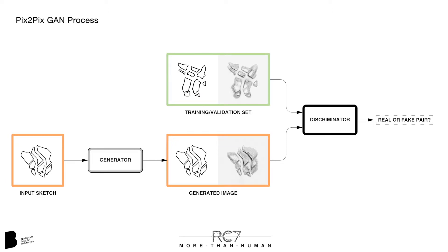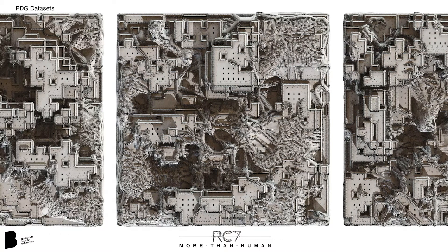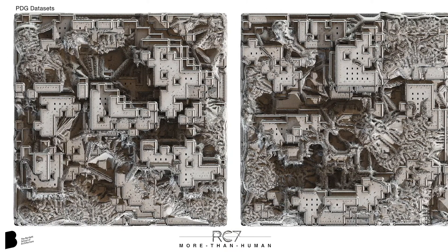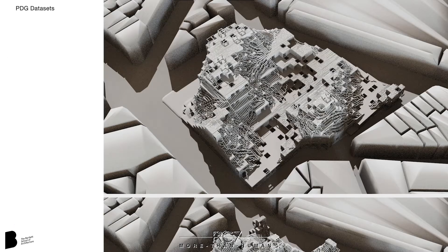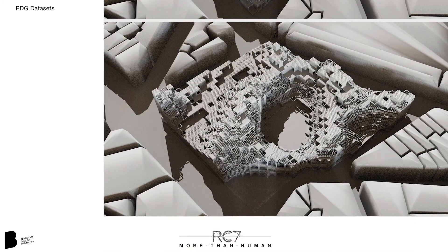The key to this process is the curation of the training dataset. Whilst most architectural work with GANs has used datasets of existing or historical buildings, we are designing our own datasets. To achieve this, we are using procedural dependency graphs. PDGs are used to make infinite variations of a design, creating a procedural species of objects or architectural plans.